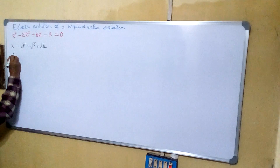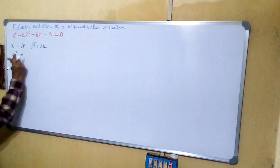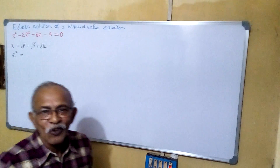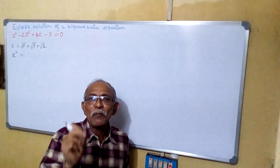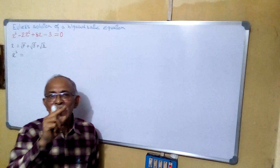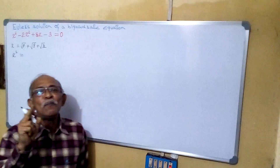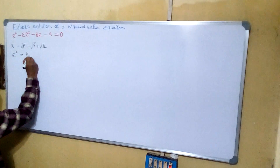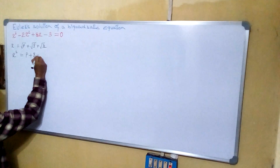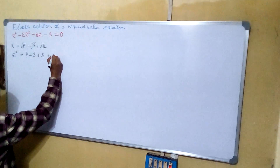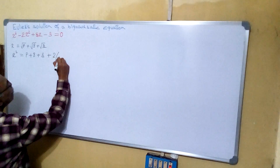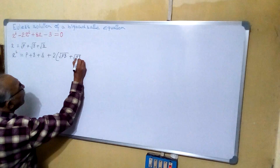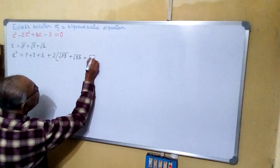Squaring both sides, what we can write: X squared equals to — I think you can remember A plus B plus C whole square — that is A squared plus B squared plus C squared plus 2 into AB plus BC plus CA. So using that, we can write P plus Q plus R plus 2 into root PQ plus root QR plus root RP.